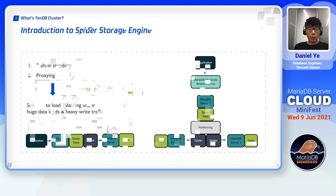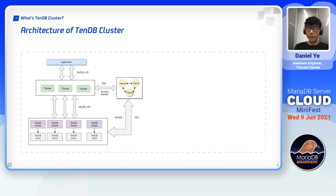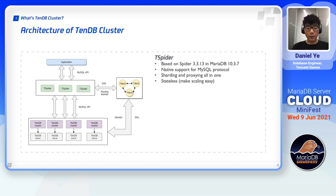Now I'm going to talk about what TenDB cluster actually is and what it can do. A typical TenDB cluster is made up of three parts. At the center is T-Spider, which is in charge of database sharding and query proxying. T-Spider is our fork of the Spider storage engine in MariaDB 10.3.7. Over the years, we've added tons of features and performance optimizations to T-Spider.